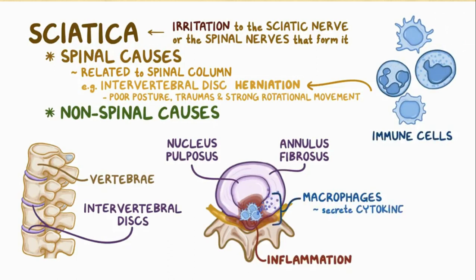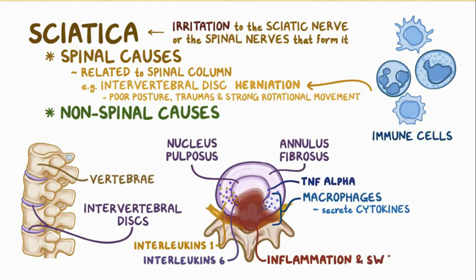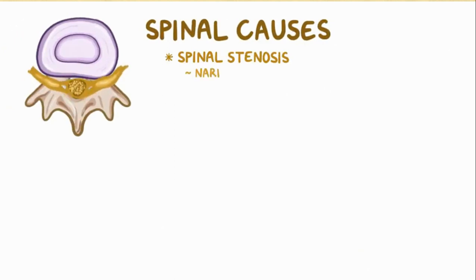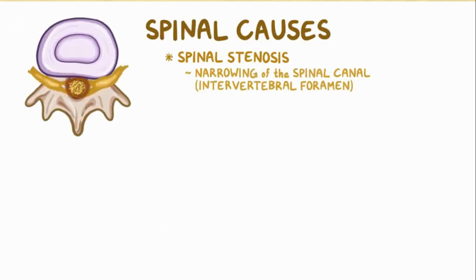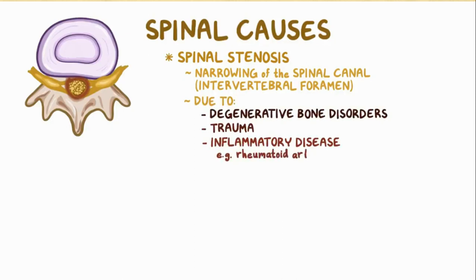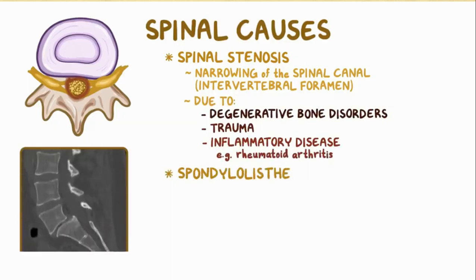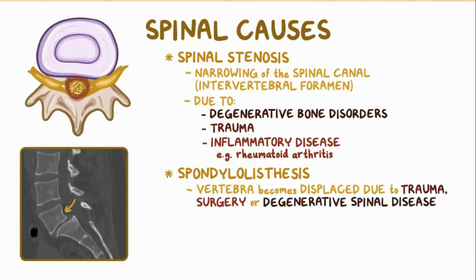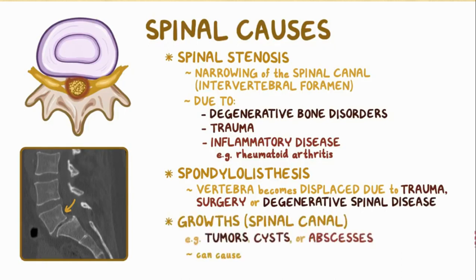In some cases, macrophages attack the nucleus pulposus and secrete inflammatory cytokines like tumor necrosis factor alpha, interleukin-1, and interleukin-6; the resulting inflammation and swelling compresses the nerves further. Spinal stenosis — narrowing of the spinal canal or intervertebral foramen due to degenerative bone disorders, trauma, or inflammatory diseases like rheumatoid arthritis — is another cause. Spondylolisthesis, where one vertebra slips due to trauma, surgery, or degenerative spinal disease, can also compress nearby nerve roots. Additionally, growths within the spinal canal like tumors, cysts, or abscesses can cause nerve compression.